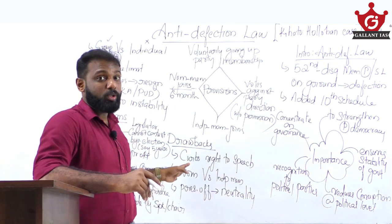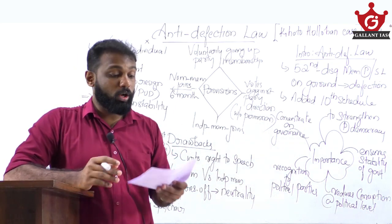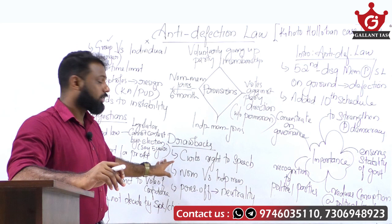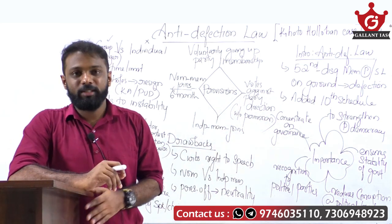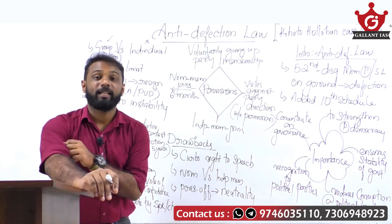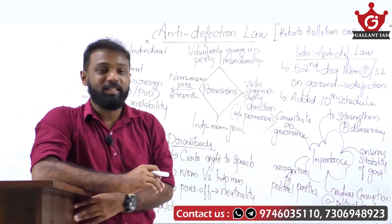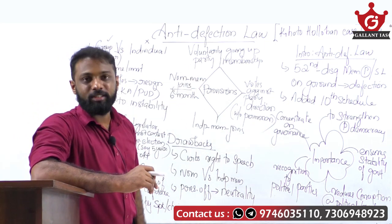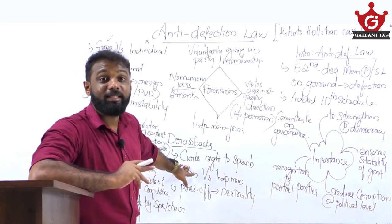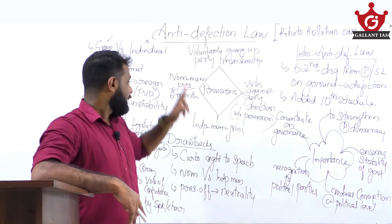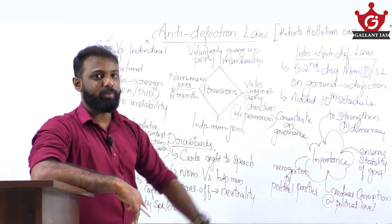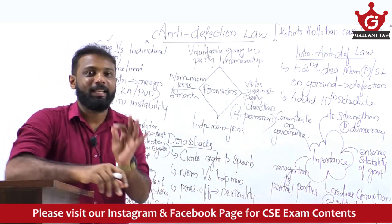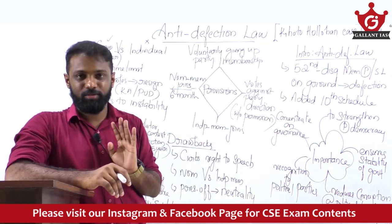Now moving to the second part — the drawbacks of anti-defection law. First, it curbs the legislature's right to speech. A legislator has a right to speech under Article 19 of the Constitution, but because of anti-defection law, a legislator cannot vote according to his conscience. He has to follow the party directions, so this law curbs the legislature's right to speech — he cannot vote as he wishes but must follow the political party he belongs to.